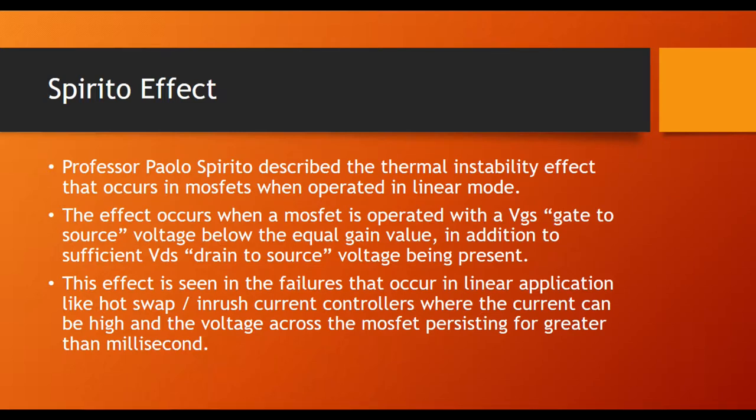If there is sufficient voltage across the device during that time and current going through it, you can run into some thermal instabilities occurring. This effect has been seen a lot in linear applications like hot swap and inrush current controllers where you can have a high current pulse occurring when there's a large voltage across the device.